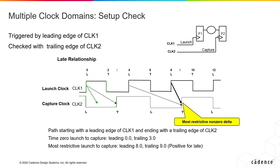In the case of multiple clock domains, we do need to look at the most restrictive capture and launch combination. If we look at the time 0 launch, the capture will occur at the trailing 3. Whereas if we look at the leading edge 8 launch, the capture will happen on CLK2 at the trailing 9. This seems to be the most restrictive or worst case combination. We have to look at that worst case combination of launch and capture to make sure that the design meets the timing, or the setup check, for that particular restrictive capture and launch combination.